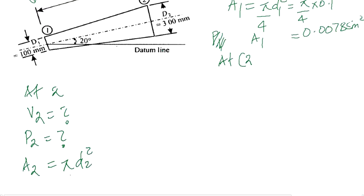And A2 is equal to pi over 4 times d2, which is 0.3 squared. This gives us 0.0707 square meters.